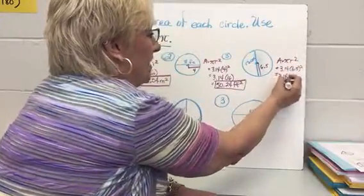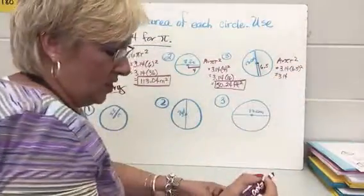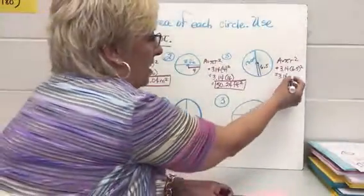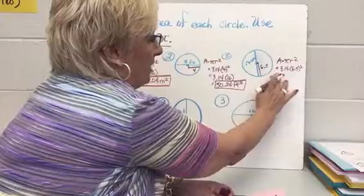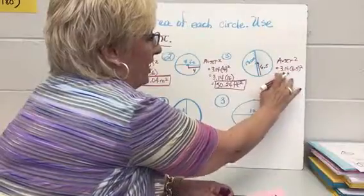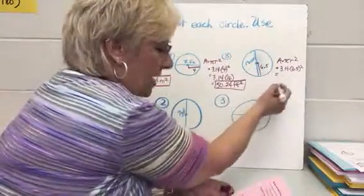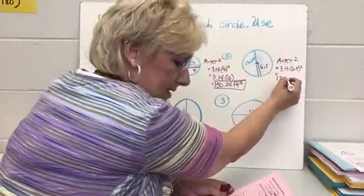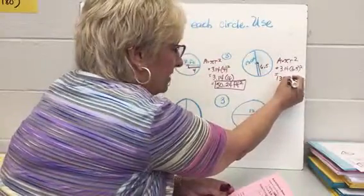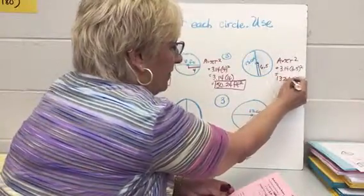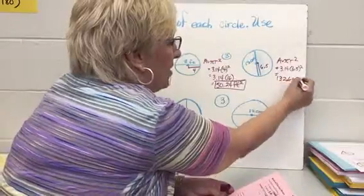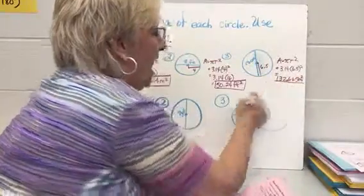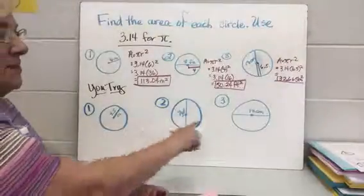That's 3.14 times 6.5 squared. When I put it all in my calculator, the whole area is going to be 132.665 centimeters squared.